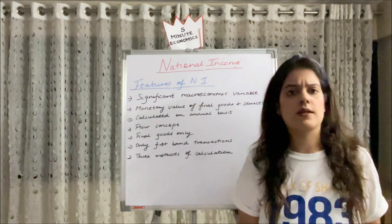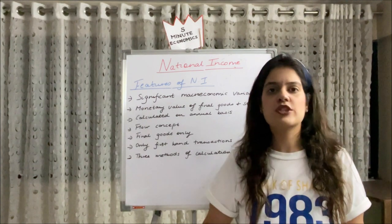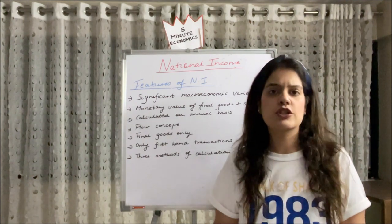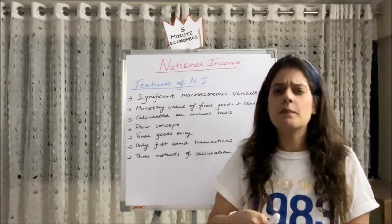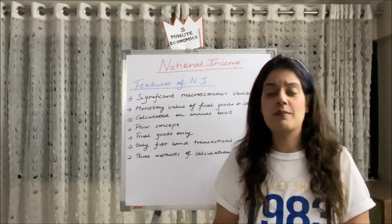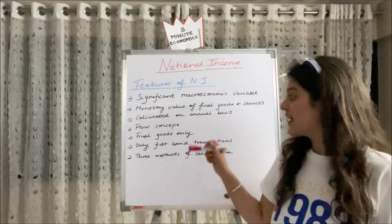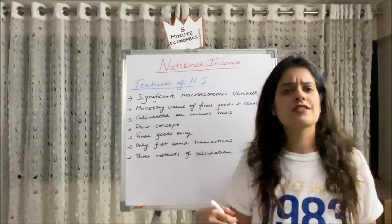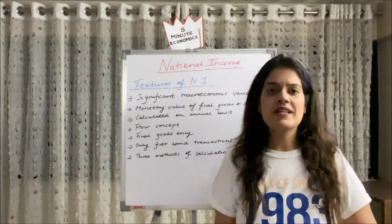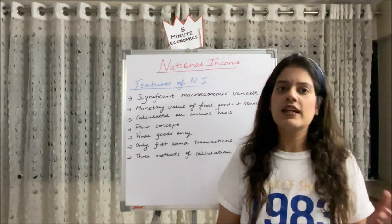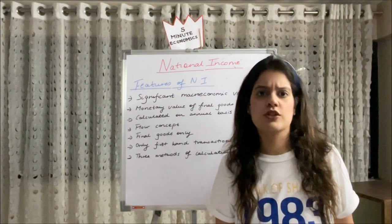Next, national income is a flow concept. A flow concept is something measured over a period of time, not at a particular point in time like a stock concept. Next, it considers only final goods and not intermediate goods.